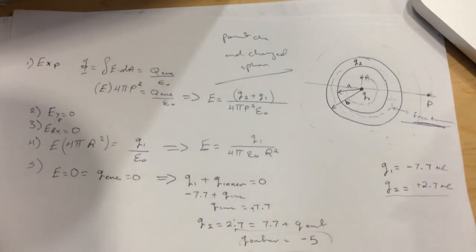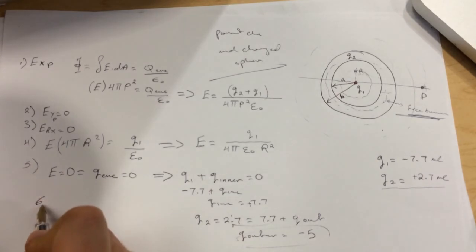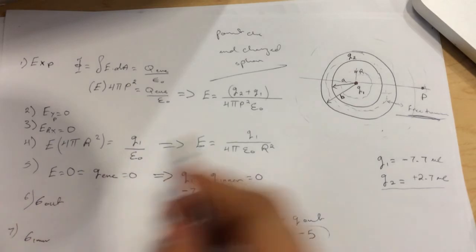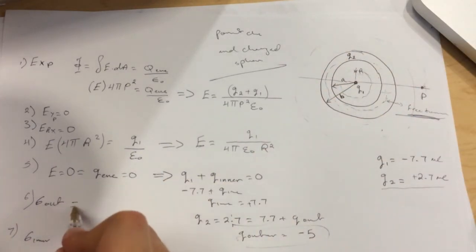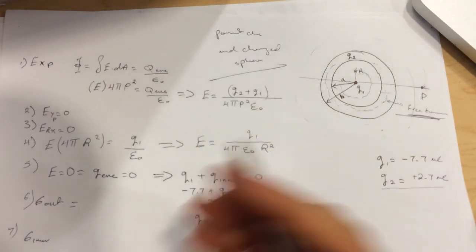Going back to the question, they were asking what is the sigma outer and sigma inner. The sigma outer is equal to the charge of the outside divided by the surface of the outside.